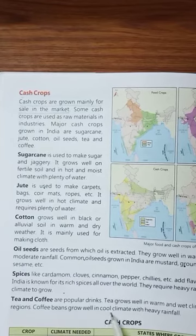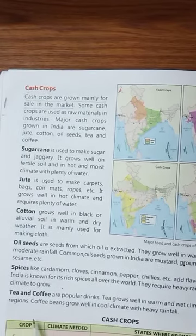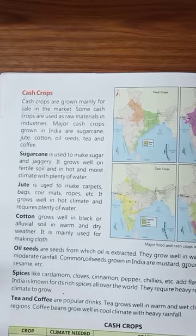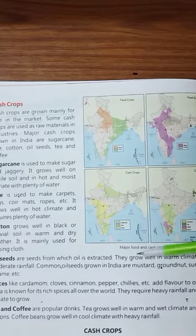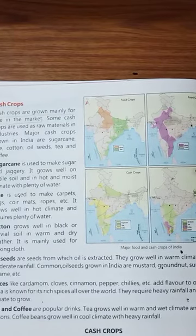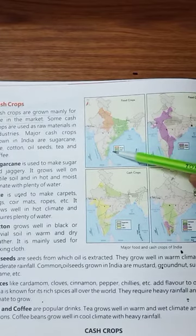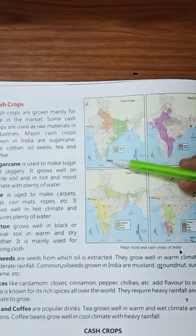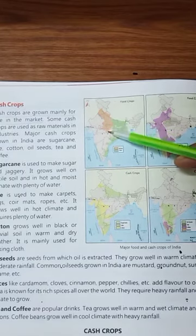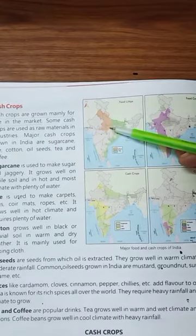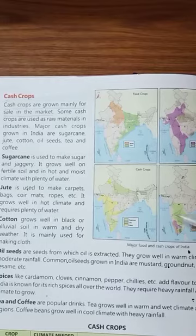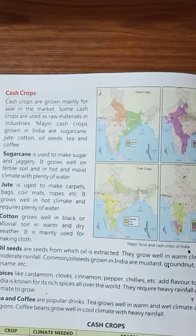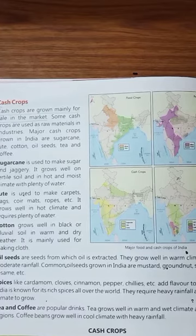Tea and coffee are popular drinks. Tea grows well in warm and wet climate. Coffee beans grow well in cool climate with heavy rainfall, in hilly regions. In this map, everything is shown regarding major food and cash crops of India. Here the index is given, and from this you can recognize what is mentioned — which color refers to which kind of crop. Similarly, here it is shown where more oil, cotton and jute are found. You can see the map.